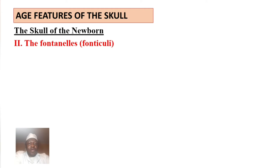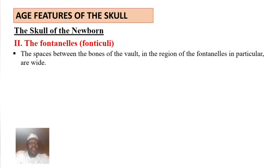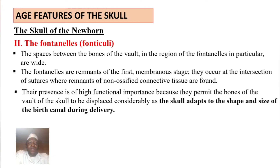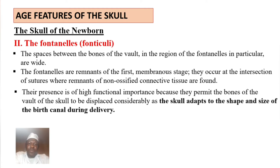The second specific feature of the newborn skull is the fontanels — fonticuli. These are large spaces found between the bones of the vault, remnants of the first membranous stage of development, located at the intersection of sutures where non-ossified connective tissue remains. Their presence is functionally important because they permit the bones of the vault to be displaced considerably as the skull adapts to the shape and size of the birth canal during delivery. They also allow growth monitoring over time, disappearing at specific periods one by one.